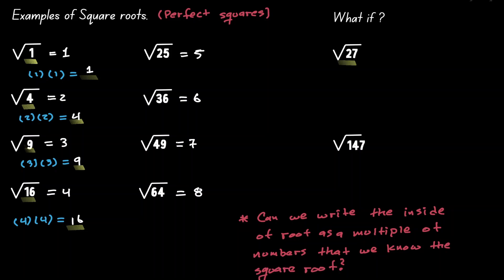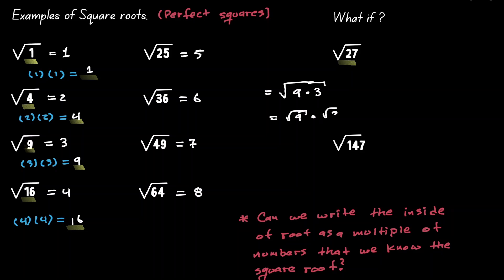So now let's think about it. Notice that we can write the value of 27 as 9 times 3. Why did we choose 9? Because we know the square root of 9, which is 3. So we were able to write the inside as a multiple of a number whose square root we know. Now that we've identified this, we can apply the rules of roots, which says that if you're multiplying inside the square root, you can take the square root of each factor individually. So instead of the square root of 9 times 3, we can write the square root of 9 times the square root of 3.